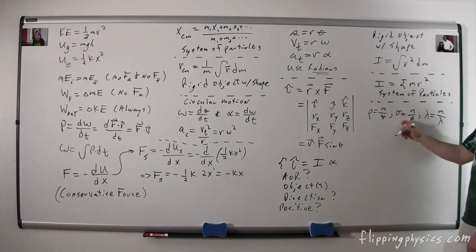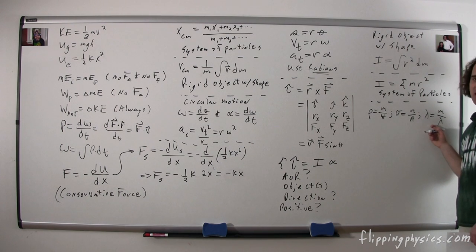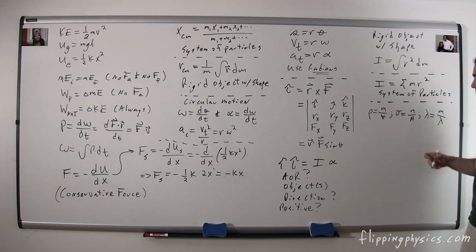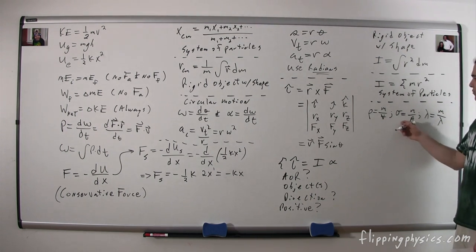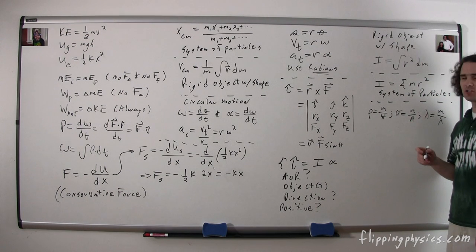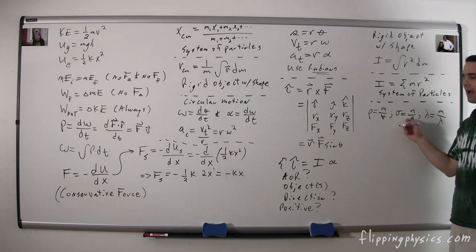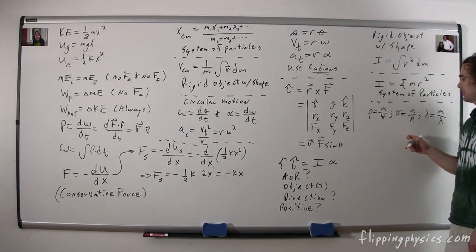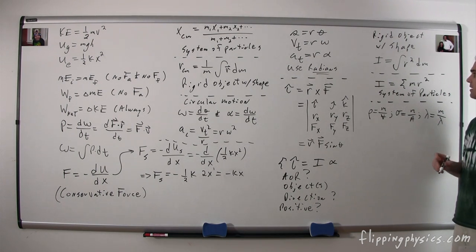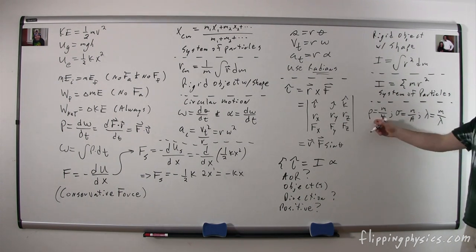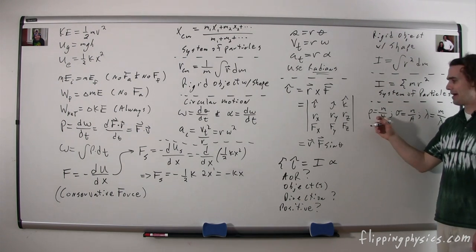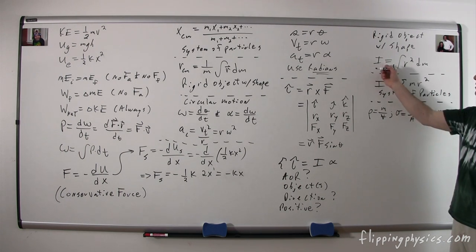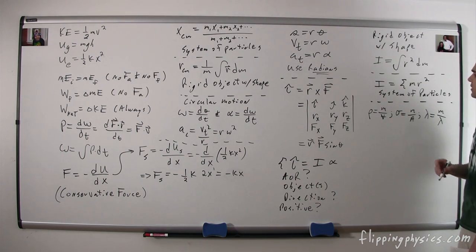When computing the moment of inertia, you generally need to work with one of the mass densities: volumetric mass density (rho), surface mass density (sigma), or linear mass density (lambda). In mechanics, you most often work with volumetric or linear mass density.